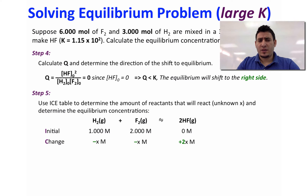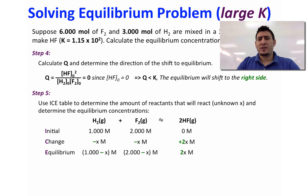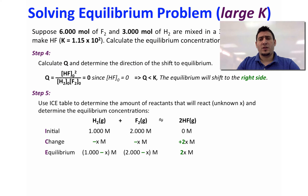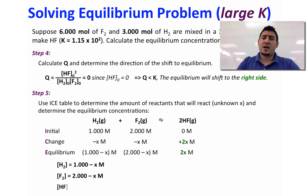At equilibrium, we will have (1 − X) M for hydrogen, (2 − X) M for fluorine, and 2X for HF. These are then listed as the equilibrium concentrations.